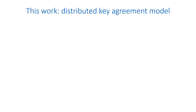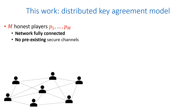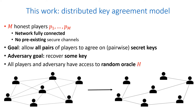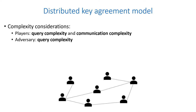In our paper, we investigate a distributed key agreement model in which there are m honest players that form a fully connected network and there are no pre-existing secure links between the players. The goal of such a protocol is to allow all pairs of players to agree on secret keys. The goal of the adversary is to recover some key of an arbitrary pair of players. Our model also uses a random oracle, which is accessible by all parties. In terms of complexity, for the players we consider the query and communication complexity, and for the adversary we consider the query complexity only.